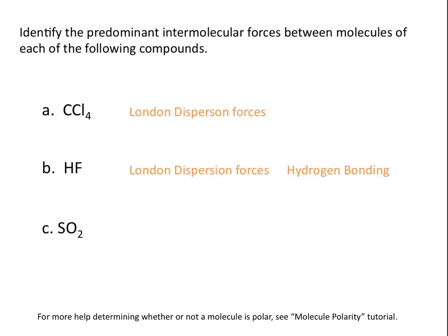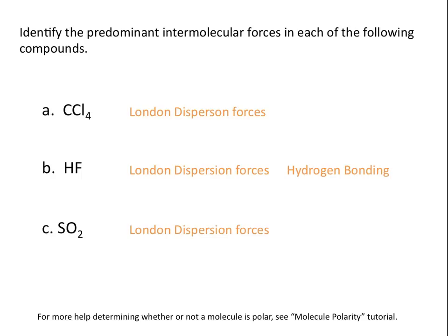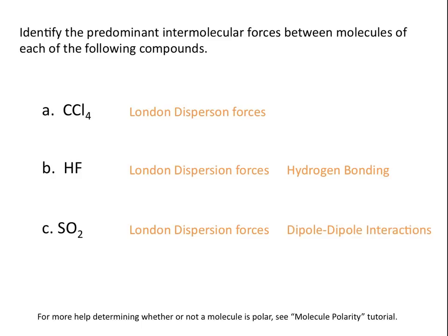C, sulfur dioxide. All molecules have London dispersion forces, regardless of whether they're polar or not. Sulfur dioxide is a polar molecule — you can determine this by drawing out the Lewis dot structure and determining the molecular geometry. Because it's a polar molecule but doesn't contain hydrogen bonds, you will see dipole-dipole interactions between molecules of sulfur dioxide.